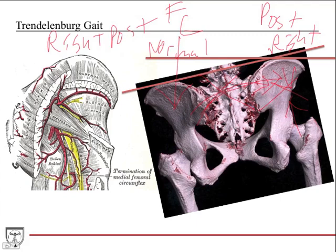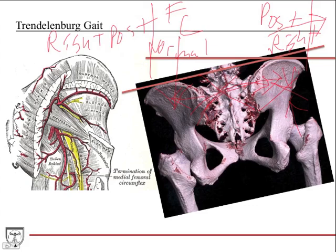Since the pelvis tilts to the unaffected side, to compensate while walking the patient leans toward the weight-bearing side, using their torso and trunk to pull the pelvis back into place. This is called a waddling or gluteal gait. The reason patients lean to the affected side is to allow adequate room for the foot to clear the ground as it swings forward. Additionally, since gluteus medius and minimus are major hip abductors, patients with superior gluteal nerve injury will also have very weak hip abduction.